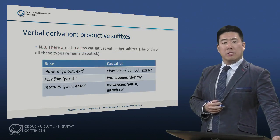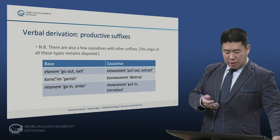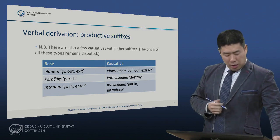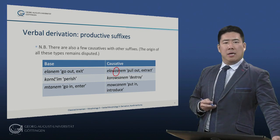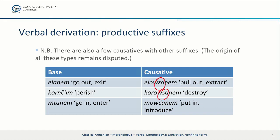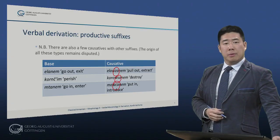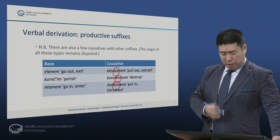There are also a few causatives with other suffixes, and the origin of all of these types — both the productive -oits/-uzanem as well as these smaller types — remains disputed. To elanem 'go out, exit,' we have a causative eluzanem, not with a ts but with a z. To koranchim 'perish,' korusanem 'to make perish or destroy' — here the consonant is an s. Finally, to the antonym of elanem, namely mdanem 'go in or enter,' we have mutsanem — with a voiceless non-aspirated ts — meaning 'to put something in, to introduce.' These are smaller, unproductive types; just note that the shape is the same as the productive type, just with a different consonant.